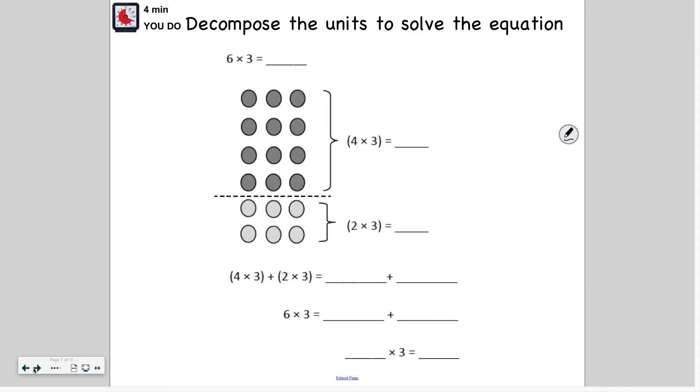So let's try this last one on your own. So pause now. Gather whatever materials you need to solve and solve on your own. Then press play when you're ready to check your work. Pause now. Press play when you're ready to check your work. So here we're solving six times three. They've already decomposed six for us to represent four and two, because four plus three equals six.